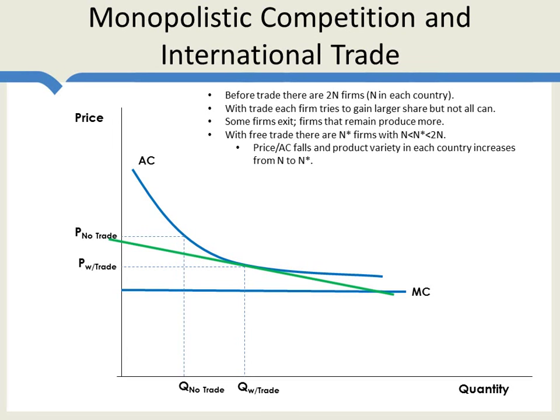I can give you the intuition. Consumers care about two things: lower prices and more variety. What free trade does is allow them a better trade-off, and they end up taking more of both. They end up with lower prices, but they don't just take lower prices — they use some of the gains from free trade to obtain higher variety. So after free trade, people in each country have access to N-star products, which is bigger than before, so they get more variety; but prices have also fallen, so they get lower costs as well. A little bit of the best of both worlds.